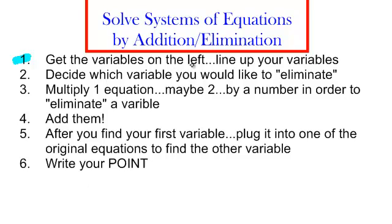First step, get the variables on the left and line up those variables. Decide which variable you would like to eliminate. It's your choice. Multiply one of the equations, maybe two, by a number in order to eliminate your variable. Add them up. After you find your first variable, plug it into one of the original equations to find the other variable and write your point.